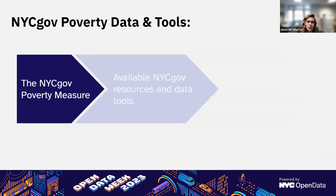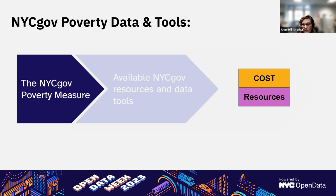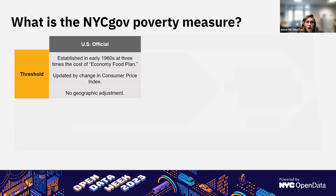Before getting to the actual report and current data tools, I'm going to tell you a bit about the NYCGov Measure itself. Like the official poverty measure, the NYCGov Measure reflects people's abilities to meet their basic needs by considering the cost of those basic needs, as well as the resources families have to meet them. A poverty threshold represents the cost of basic needs, and the official poverty threshold was originally developed in the 60s, defined as three times the cost of the economy food plan. It's remained largely unchanged since, except for annual inflation adjustments, and there's no geographic adjustment for cost of living. So a threshold for a small town in Iowa also applies to New York City.